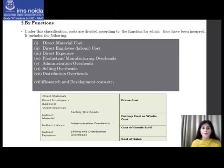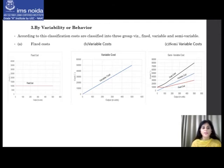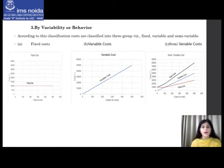Next, classification by variability or behavior: costs are classified into three types — fixed, variable, and semi-variable. Fixed costs are incurred for a period and within certain output limits tend to be unaffected by fluctuations in the level of activity, output, or turnover. They do not increase or decrease with changes in output. For example, rent and insurance on a factory building remain the same for different levels of production.